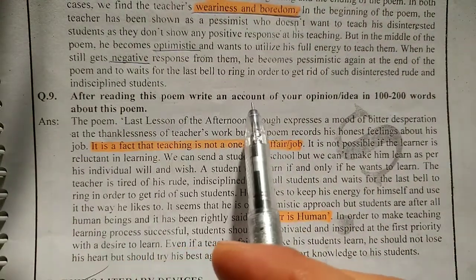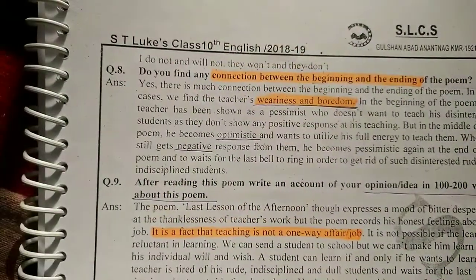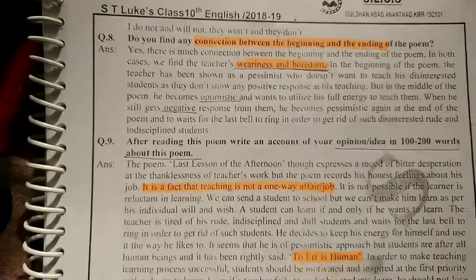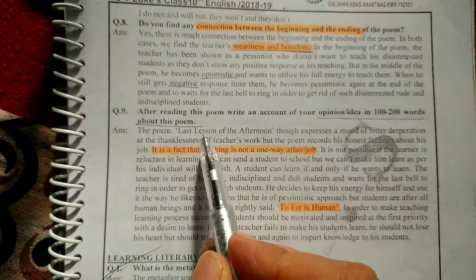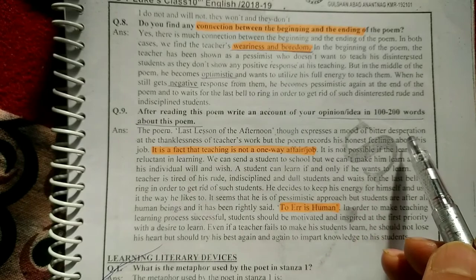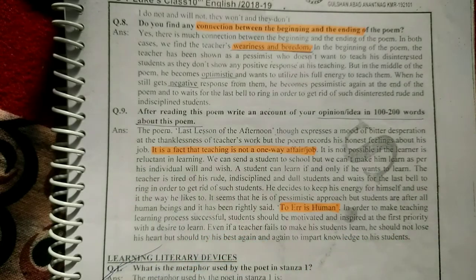After reading this poem, write an account of your opinion or idea in 100 to 200 words about this poem. The poem 'The Last Lesson of the Afternoon' expresses a mood of bitter desperation at the thanklessness of the teacher's work, but the poem records his honest feelings about his job. The poem expresses utter desperation at the thanklessness of the teacher's work because the teacher's work is not getting any acceptance or acknowledgement.